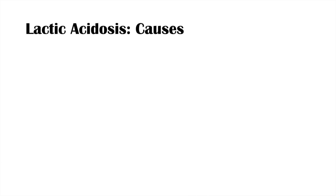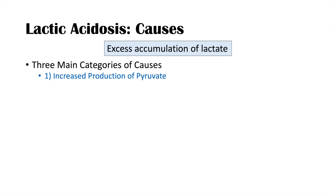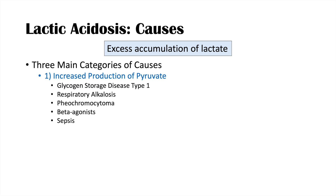Now that we know how lactic acid is produced and removed, what are some causes of lactic acidosis? Lactic acidosis is due to excess accumulation of lactate, so anything that increases production or decreases utilization or removal can cause it. There are three main categories. The first is increased production of pyruvate — if more pyruvate is made, it can overwhelm the TCA cycle and spill over into lactic acid production. States like glycogen storage disease type 1, respiratory alkalosis, pheochromocytoma, beta agonists, and sepsis can all lead to increased pyruvate production.